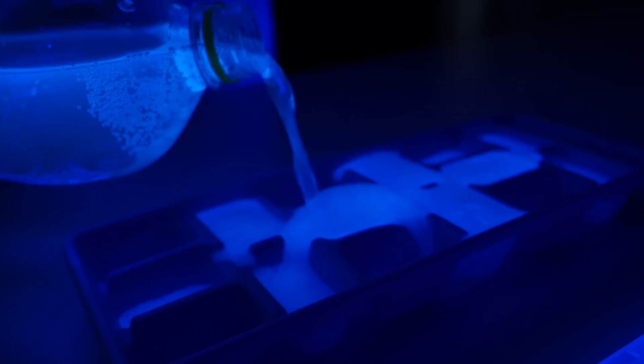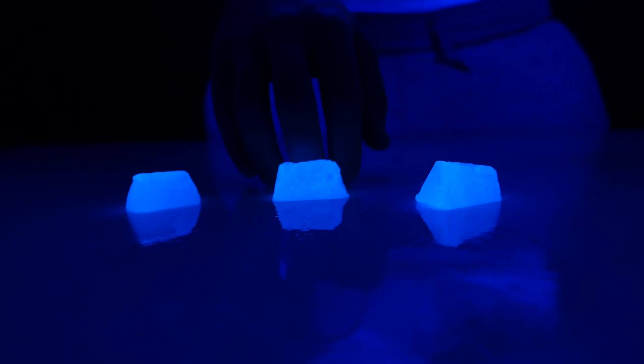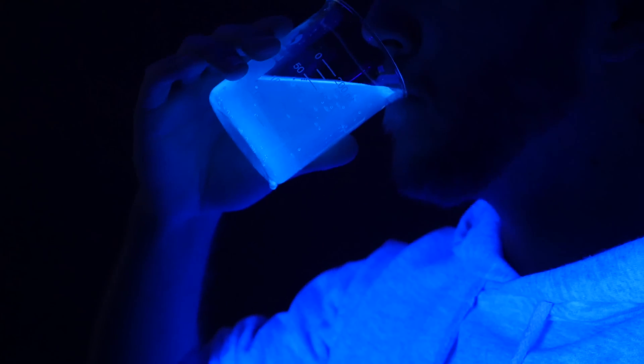As tonic water contains quinine, the liquid will start glowing under black light. Now you can pour the liquid in some ice cube forms, for example, and let them freeze normally. In the end, you'll have glowing ice cubes that aren't poisonous. Pretty cool.